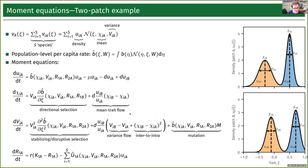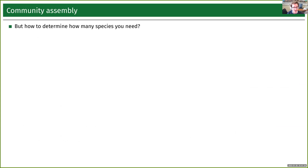We need to adjust the resource equations slightly. We still have the same local renewal on each patch, but now we calculate the population-level uptake for each species and then across all species overall. We get a very similar set of equations for the other patch. So we now have equations for tracking these eco-evolutionary dynamics for a given number of species S, but the question is how do we determine how many species you need?